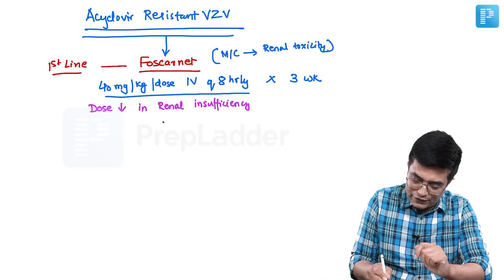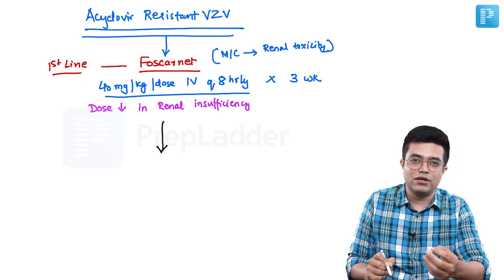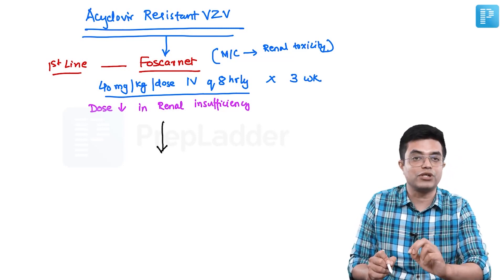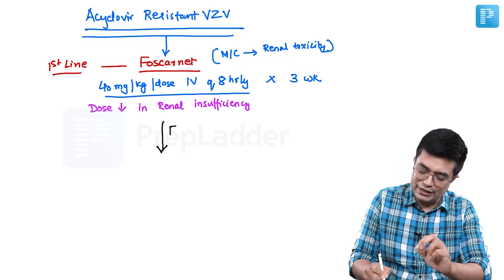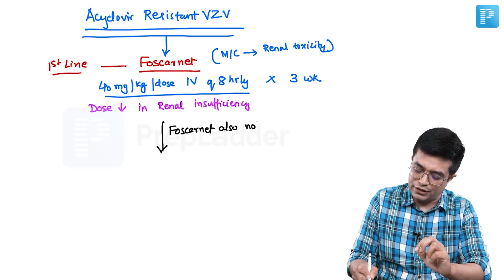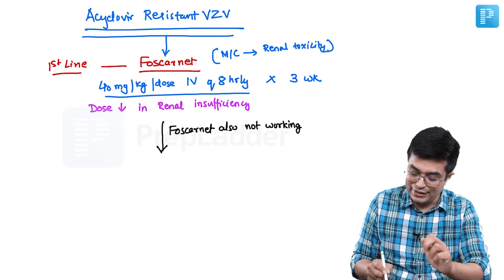Now what will happen is that many of the patients who are acyclovir-resistant VZV, about 5 to 7 percent of these patients, will also be resistant to Foscarnet. So in case you find that Foscarnet is also not working, that is Foscarnet resistance is also present in VZV, then in these patients, the alternative is Cidofovir.